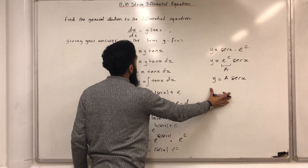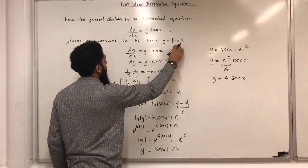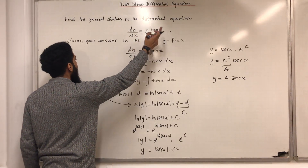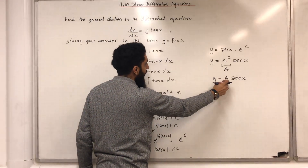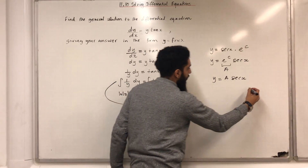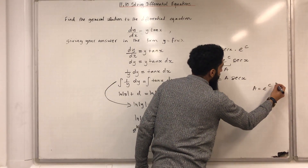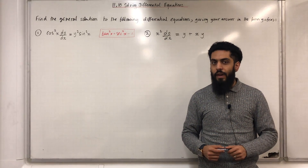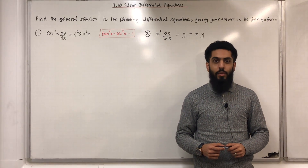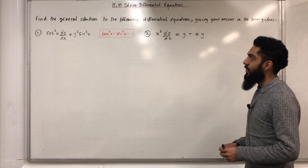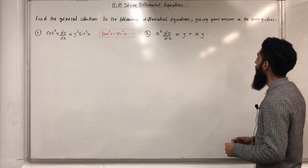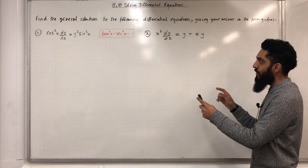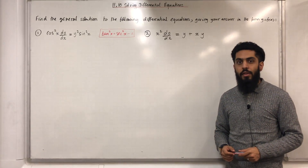Therefore I now have the form y equals f of x. The general solution to the differential equation dy over dx equals y tan x is y equals A sec x, where a equals e to the power c. I'm going to go through more examples on how to find the general solution to differential equations. Find the general solution to the following differential equations, giving the answer in the form y equals f of x — question 1 and question 2. For both of these questions we need to use the technique of separating the variables.